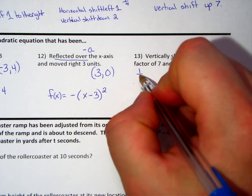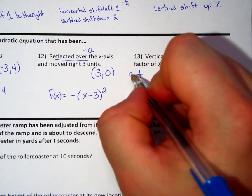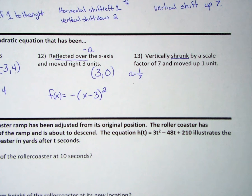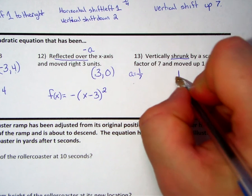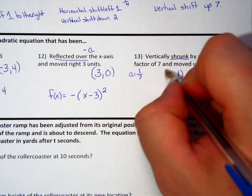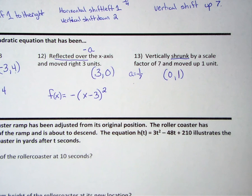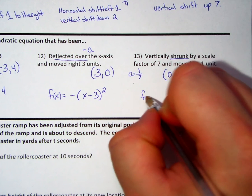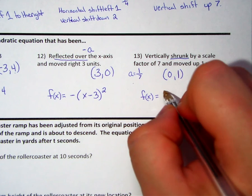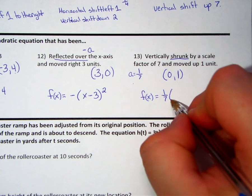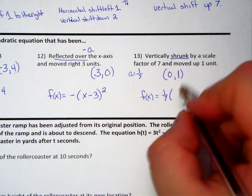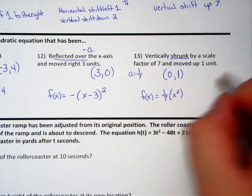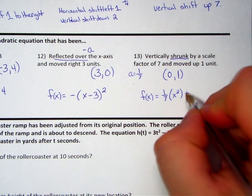We have a vertical shrink of one-seventh, which means my a value is equal to one-seventh. I don't see anything about a reflection, but we are moving up one unit, so my y value has gone up to one from zero. My x value has not moved at all, so we are now at zero, one for our vertex, one-seventh for our a value. So f of x is equal to one-seventh, our a value comes first, times x minus zero squared. Well, x minus zero is x, so I'm just going to go ahead and write x squared in here, plus one.